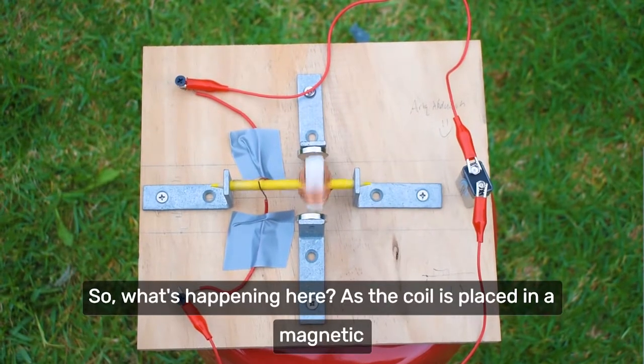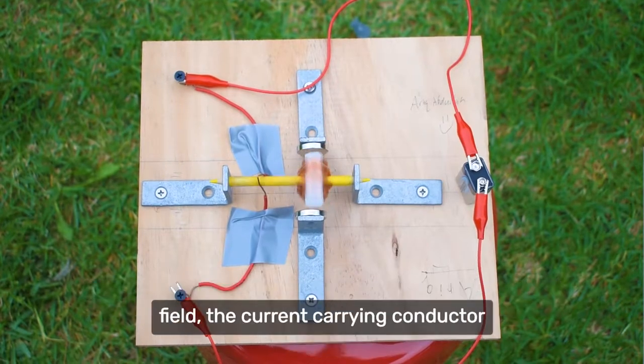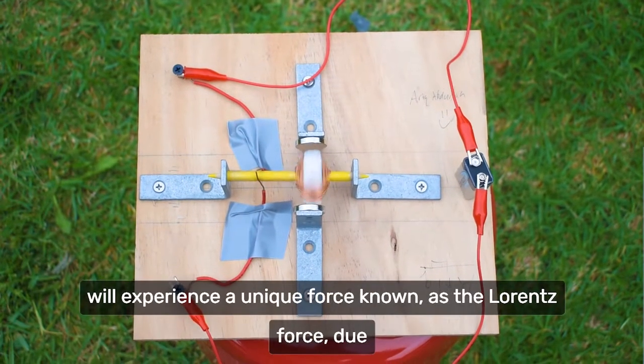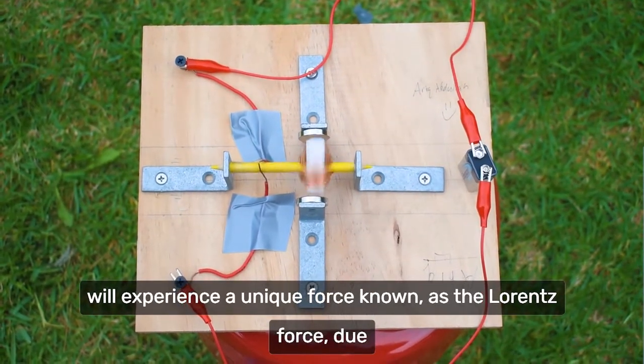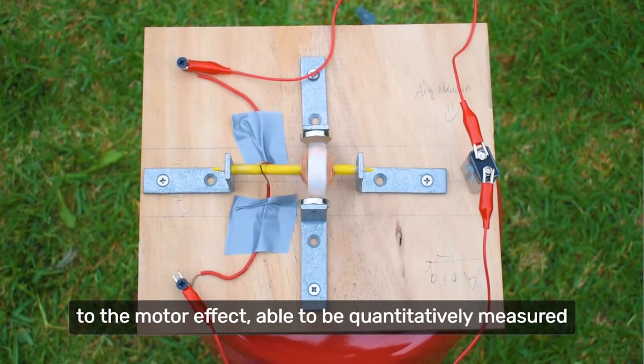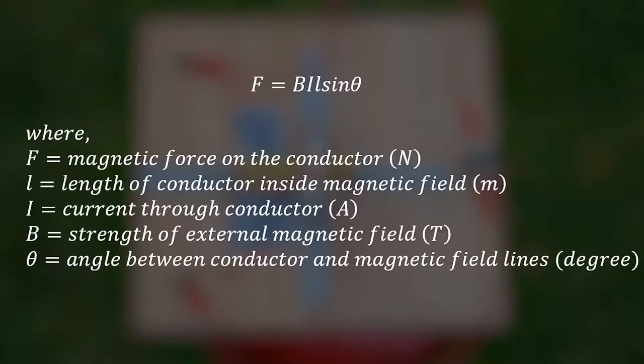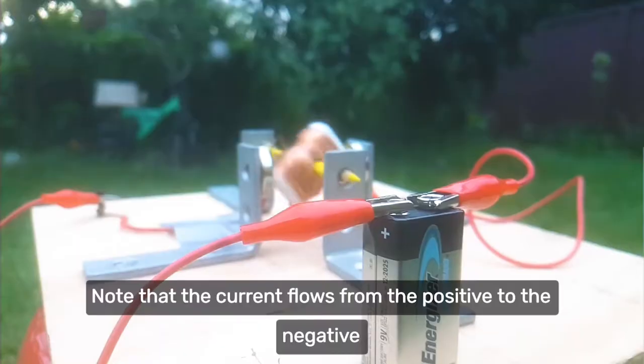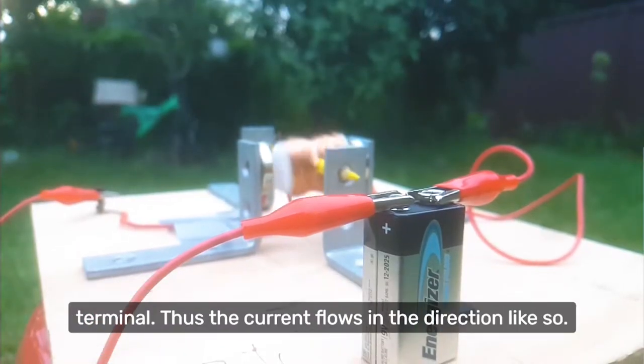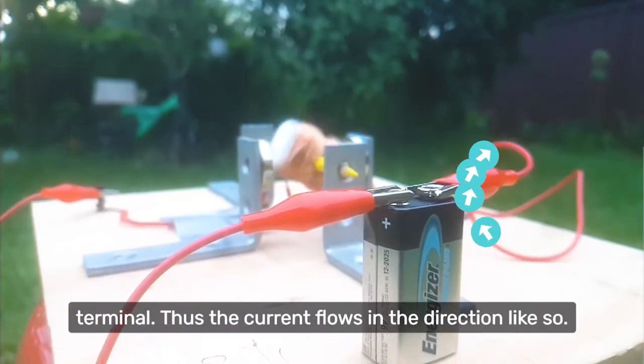So, what's happening here? As the coil is placed in the magnetic field, the current carrying conductor will experience a unique force known as the Lorentz force due to the motor effect, able to be quantitatively measured via the following equation: F equals BIL sine theta. Note that the current flows from the positive to negative terminal.